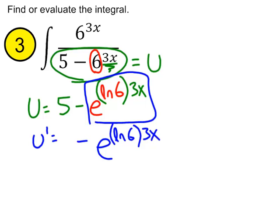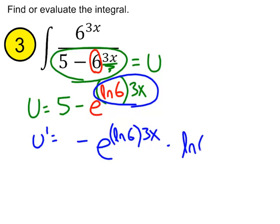And, then we'll say u prime equals, of course, the 5 is going to give us a derivative of 0 minus this function itself, e to the ln6, 3x, times the derivative of the exponent. Which, in this case, is ln6 times 3, the constant in front of the x. That would be our u prime.